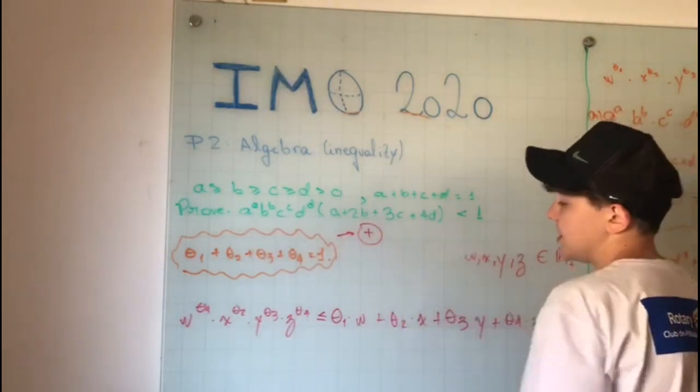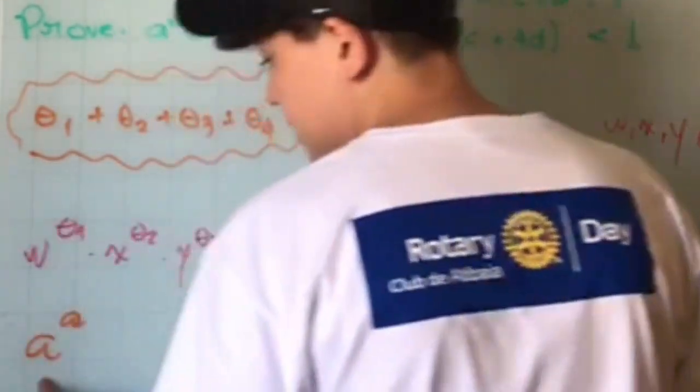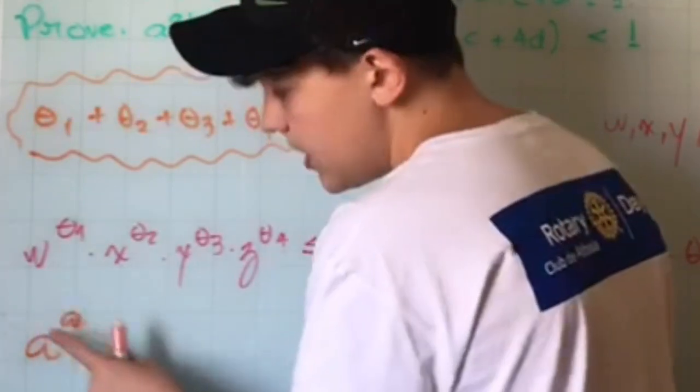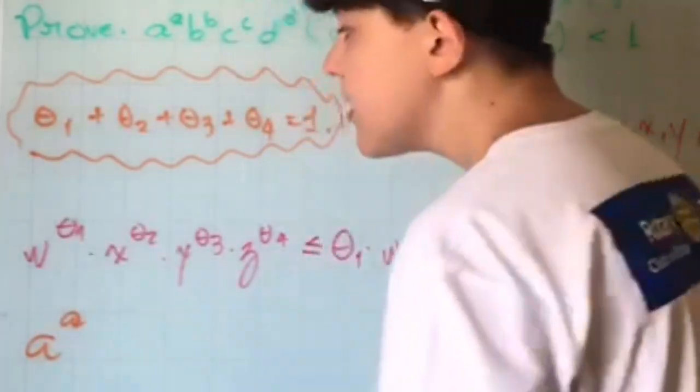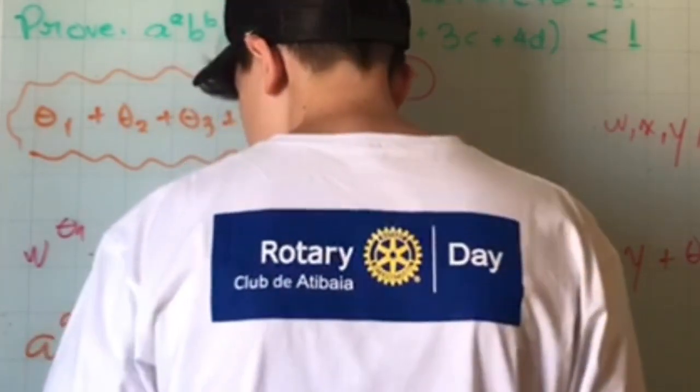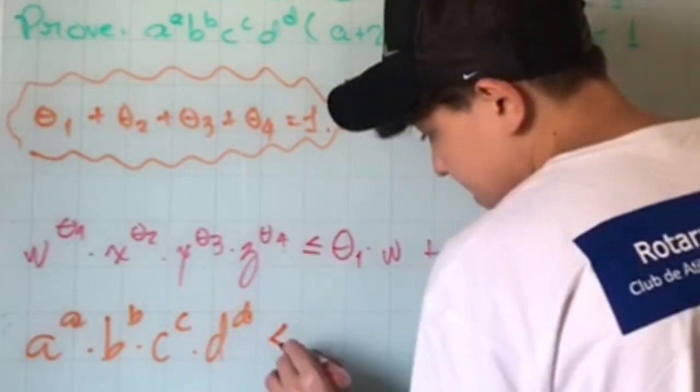If this thing is true, we can substitute all these things here and we get a^a, substituting a in the place of w and a in the place of θ₁. Doing all the things, we have a^a times b^b times c^c times d^d.